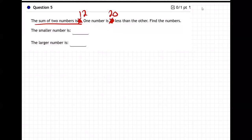Okay. So on this question, the sum of two numbers is 12. One number is 20 less than the other. Find the numbers.